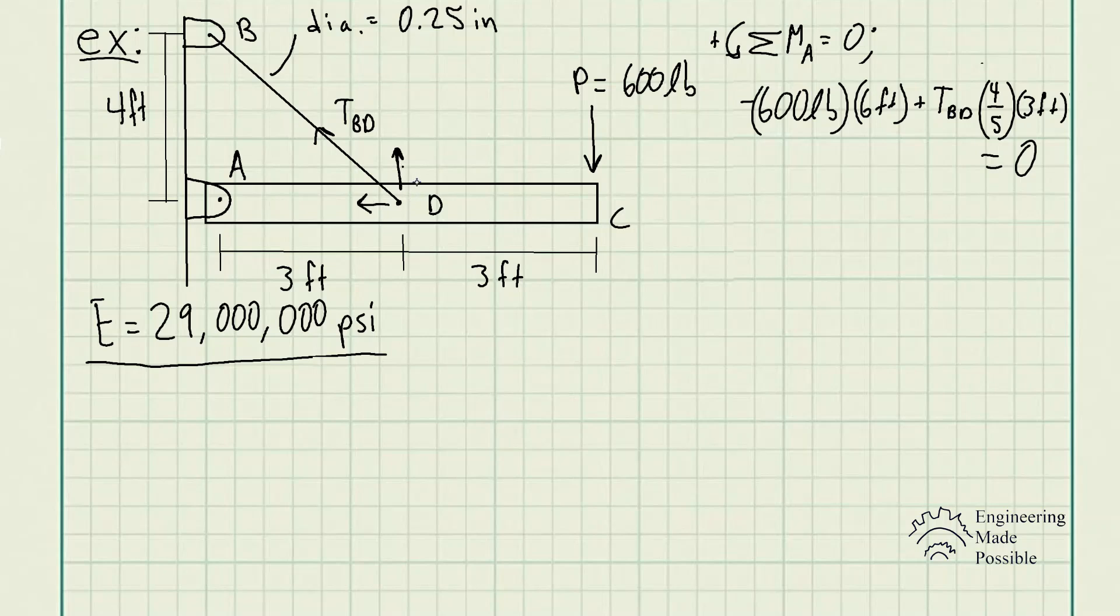However, the Y component does, and we see the perpendicular length is 3 feet with respect to point A. So we get the Y component, the tension in cable BD, times opposite over hypotenuse, 4 fifths, times that perpendicular distance 3 feet is equal to 0. From here, we're able to solve the tension in cable BD, which gives us 1,500 pounds.